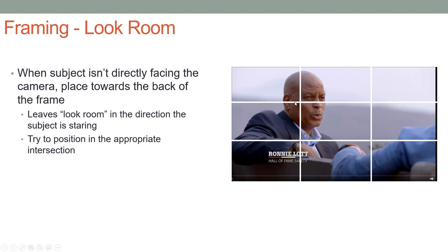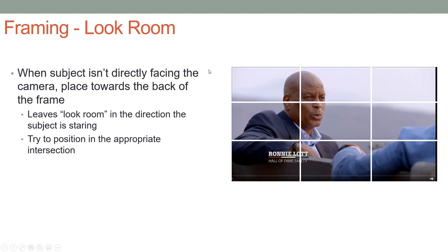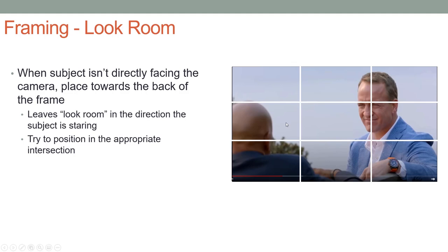This is an ESPN video. We've got Peyton Manning over here, Ronnie Lott over here. And because he's looking this way instead of at the camera, we're placing him close to this intersection. With Peyton Manning, it's absolutely perfect, which is what you'd expect. So when the subject isn't facing the camera, leave look room in the direction that he or she is facing, and try and position the eyes at this intersection or this intersection, depending upon which side they're looking towards.